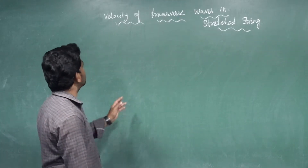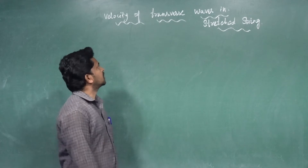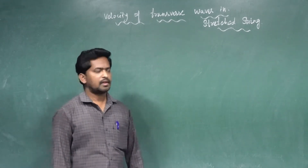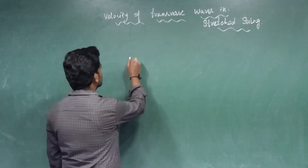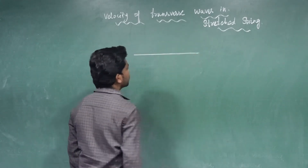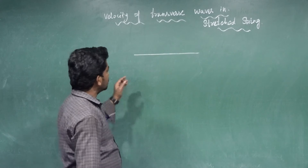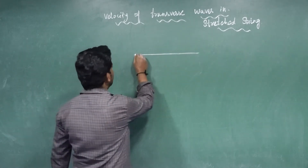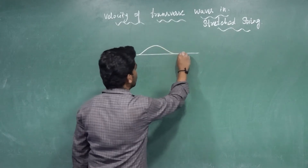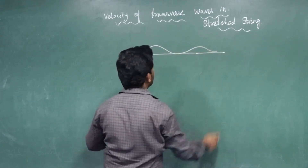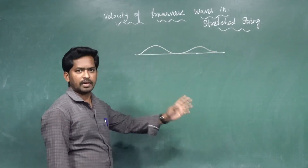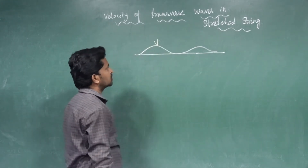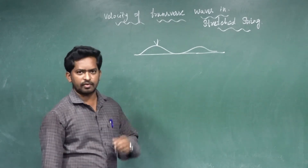Good morning students. Today our topic is the velocity of transverse waves in a stretched string. We take one stretched string and apply one pulse, which means one jerk. The pulse will be developed and will move in the direction of left to right. We want to calculate the velocity of the pulse, which is V — the velocity of the transverse waves.